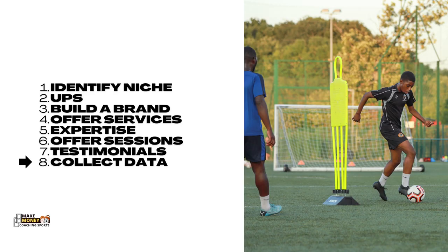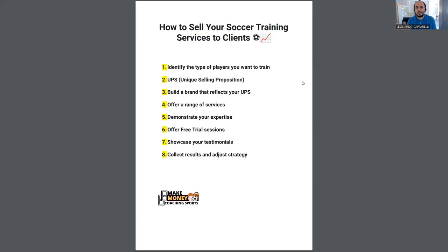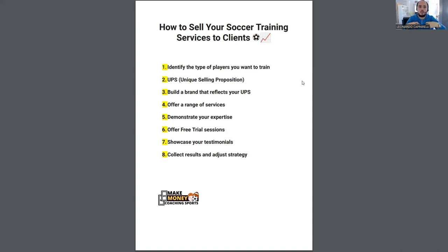Number eight: collect results and adjust your strategy. This is focused on the sales and marketing aspect. For example, if by April you had 15 sales calls and 10 evaluation sessions in February, you can collect that data, assess what worked and what didn't, and then adjust the strategy. How can you convert more sales calls into free trial sessions? When I first started, it was all about getting parents to a free session — once I had them in my ecosystem, I could demonstrate my coaching and sell them on being a longer-term client.